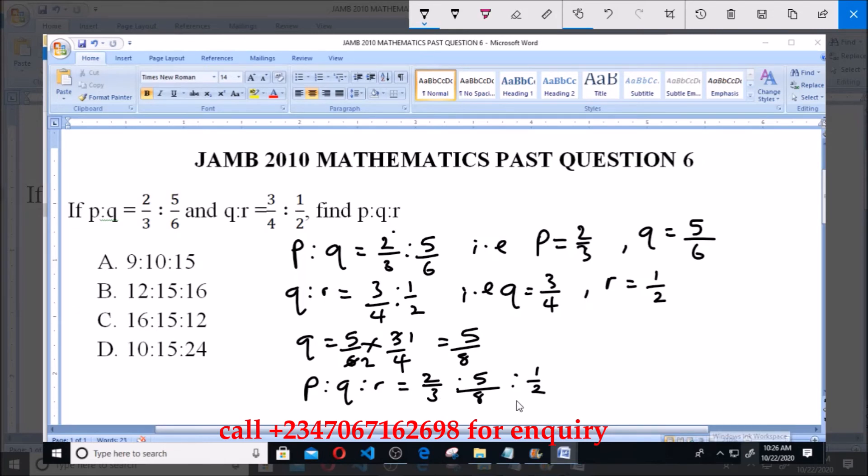So the LCM of the denominators, we have 3, 8, and 2, which is 24. Now 3 in 24 is 8, multiplied by 2 gives us 16 ratio. 8 in 24 is 3, 3 times 5 is 15.